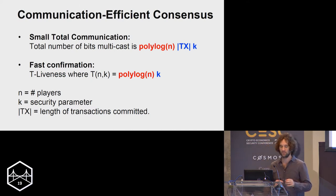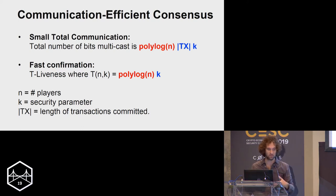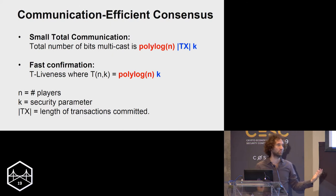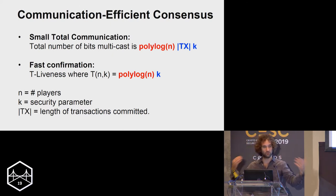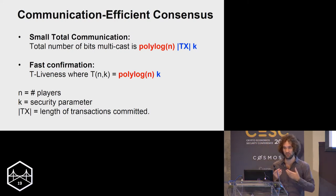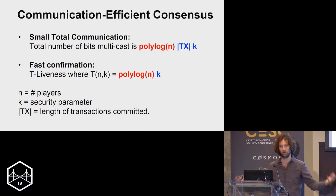More precisely, when I talk about communication efficiency I require two properties. First, the total number of bits communicated on the network should grow polylogarithmically with the number of players (and linearly with transaction length). Second, the time it takes for a transaction to get confirmed should also grow polylogarithmically with the number of players — I shouldn't have to wait a million rounds if there are a million players. So both communication complexity and confirmation time should be polylogarithmic in the number of players.